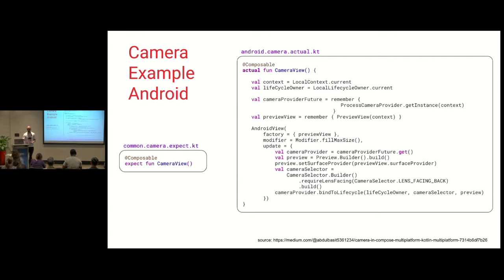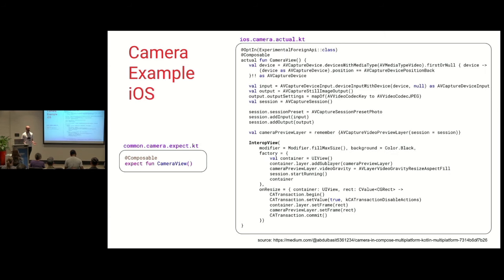The actual implementation could look like the following, where we use a PreviewView and AndroidView. This is where I was saying you can still use actual Android Views even with KMP. And then you would use the camera provider and everything. You can do the exact same thing for iOS. You completely abstract the complexity of how it's going to work, and the complexity lives in the iOS, Android, desktop, or web modules.